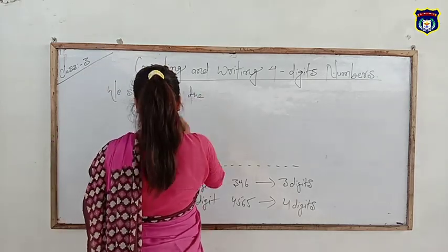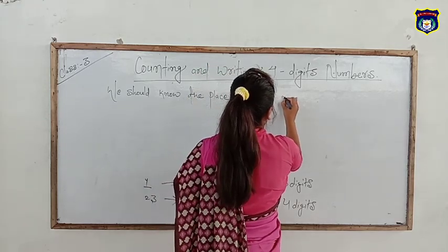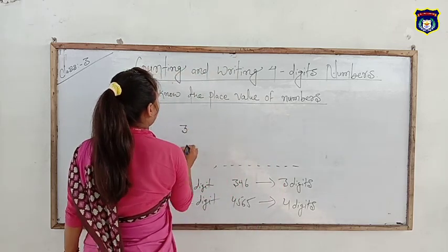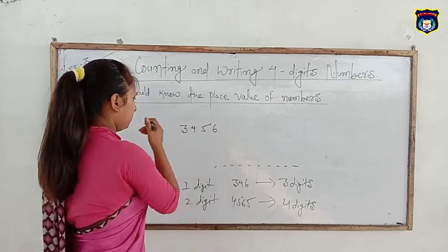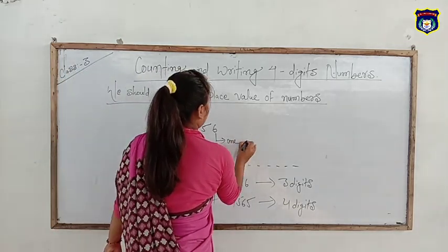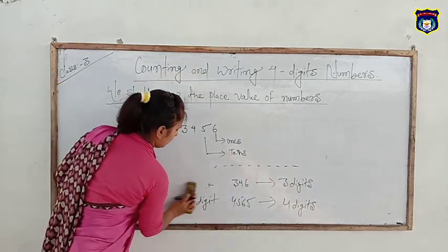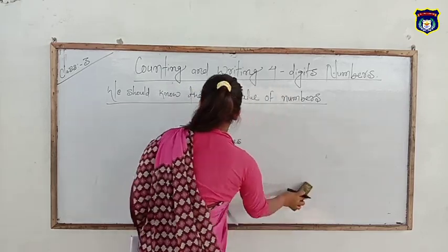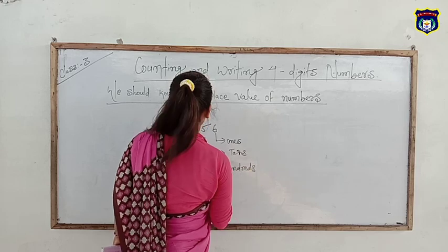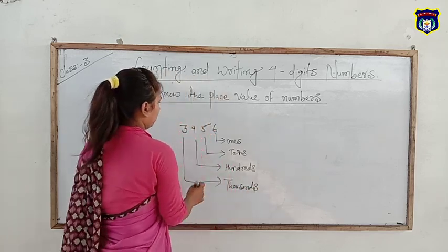The place value of numbers 3, 4, 5, 6: 6 is in the ones place, 5 is in the tens place, 4 is in the hundreds place, and 3 is in the thousands place.